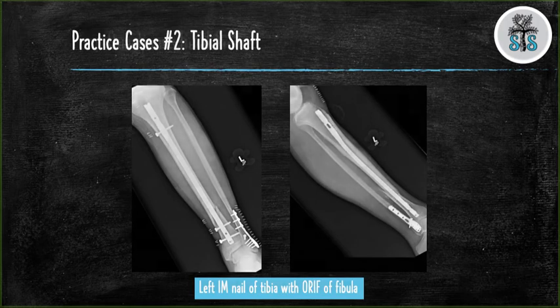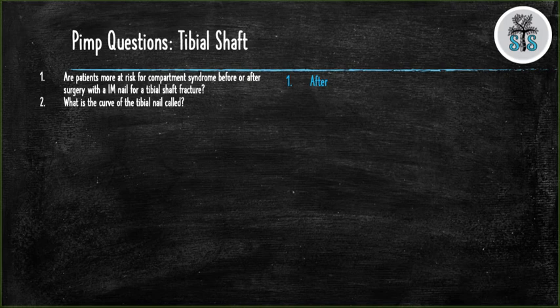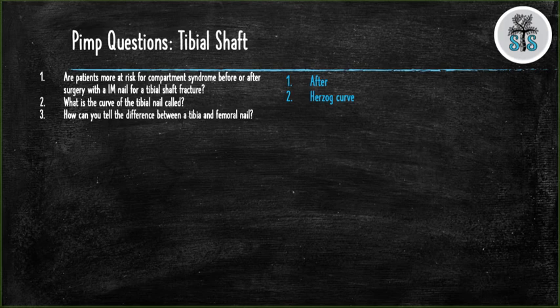PIMP question 1: Are patients more at risk for compartment syndrome before or after surgery with an IM nail for a tibial shaft fracture? After. Question 2: What is the curve of the tibial nail called? Herzog curve. Question 3: How can you tell the difference between a tibia and femoral nail? Femoral nails have an anterior curve.